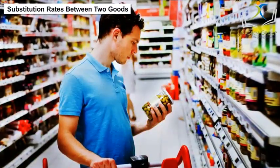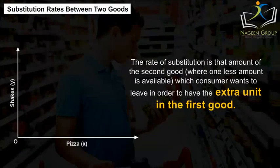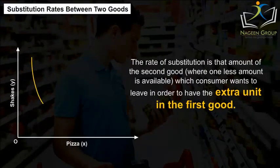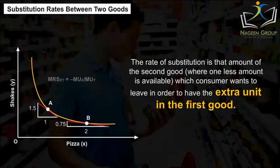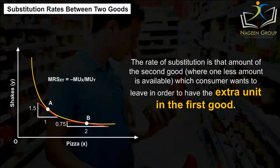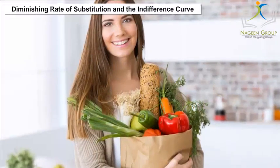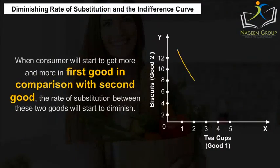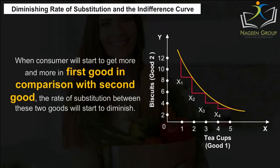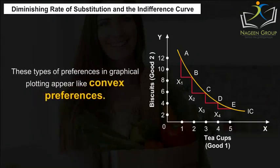Substitution Rates Between Two Goods. The rate of substitution is the amount of the second good that the consumer is willing to give up in order to have one extra unit of the first good. Diminishing Rate of Substitution and the Indifference Curve. When the consumer starts to get more and more of the first good in comparison with the second good, the rate of substitution between these two goods will start to diminish. These types of preferences in graphical plotting appear like convex preferences.